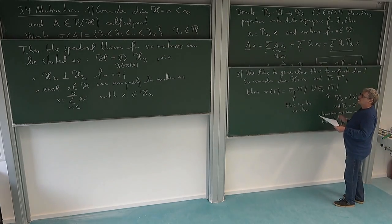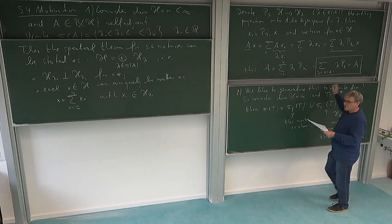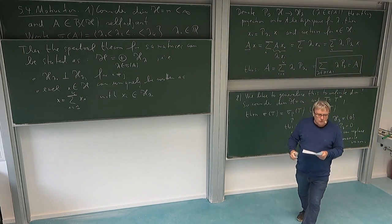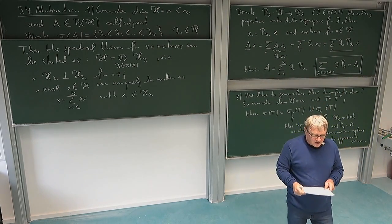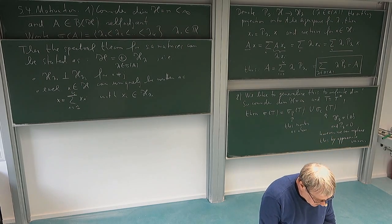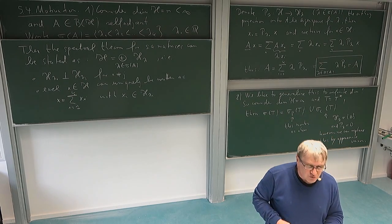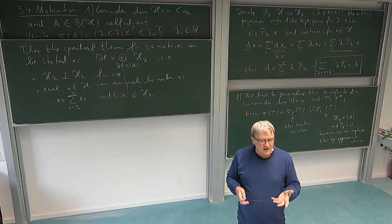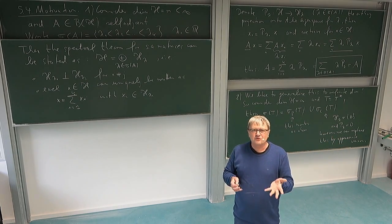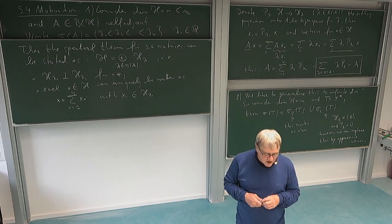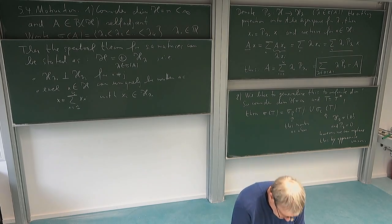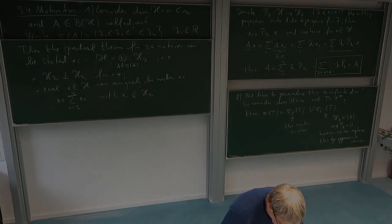Let us look at this in the case of the canonical example where we have really seen what approximate eigenvectors mean, namely the multiplication operator.